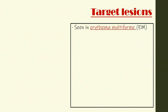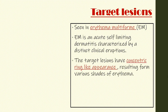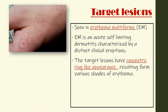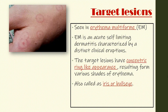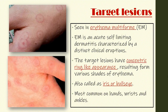Target lesions are seen in erythema multiforme, which is an acute self-limiting dermatitis characterized by distinct clinical eruptions. The target lesions have a concentric ring-like appearance resulting from various shades of erythema. It is also called the iris or bull's eye lesion and is most commonly seen on the hands, wrists, and ankles.